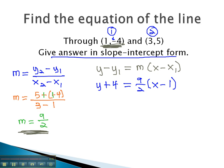Because the directions ask us to put it in slope-intercept form, we must start solving for y by distributing the 9 halves. y plus 4 equals 9 halves x minus 9 halves.